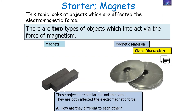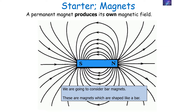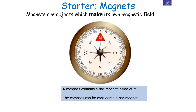There are two types of objects which interact via the force of magnetism: magnets and magnetic materials. These objects are similar but not the same — they're both affected by the magnetic force, but how are they different? Well, a permanent magnet produces its own magnetic field. We're going to consider bar magnets, which are magnets shaped like a bar. It's important to note that magnets are objects which produce their own magnetic field. A compass contains a bar magnet inside it, so we can consider a compass to be a bar magnet.